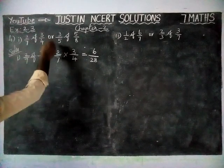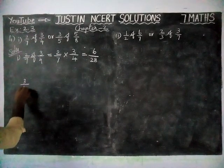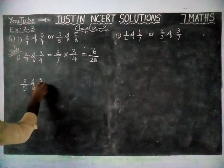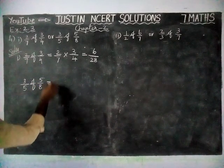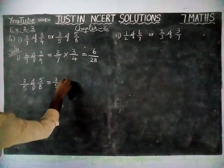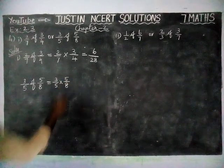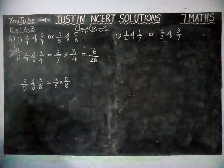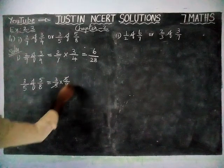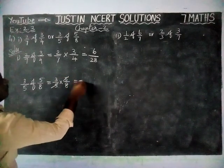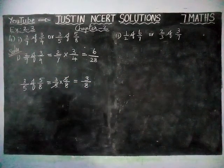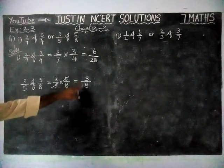Next, 3/5 of 5/8 is equal to 3/5 into 5/8. And here, 5 and 5 is a common number, so we are canceling. 5/5 cancels, giving 3/8. This is a proper fraction, we cannot simplify.